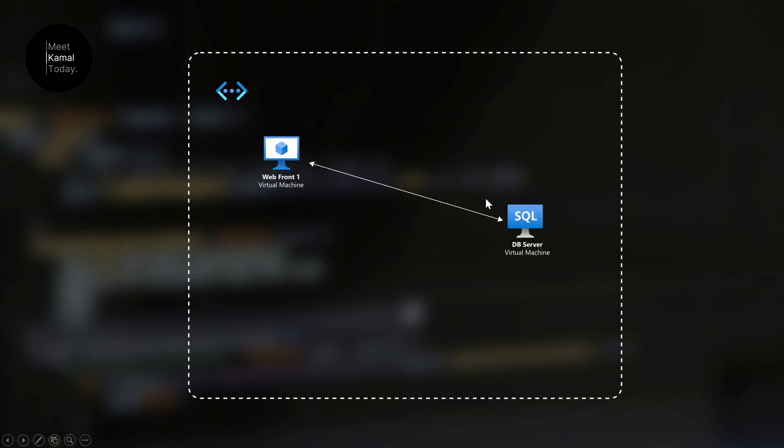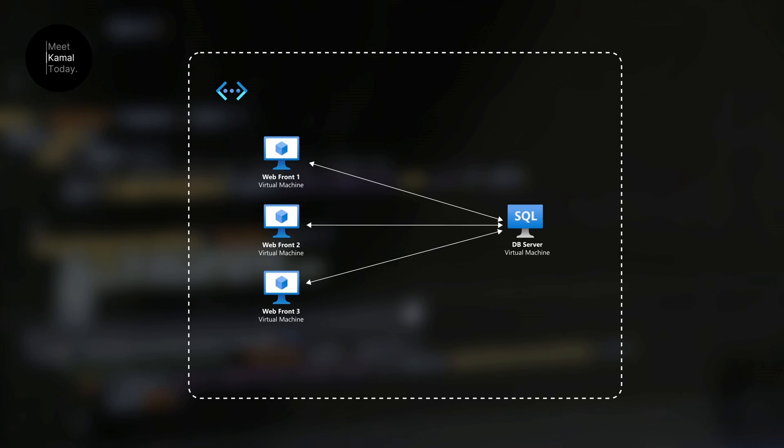Because of that, I have configured a network security group on this database server so that only this web frontend can access it. But let's say I want to scale my web frontends and add multiple VMs. In this scenario, I have to add multiple rules with multiple IPs, and that's not easy. That's why we have application security groups — you can group these VMs together and apply security rules for that entire group, so only the virtual machines in that application security group can access the server.